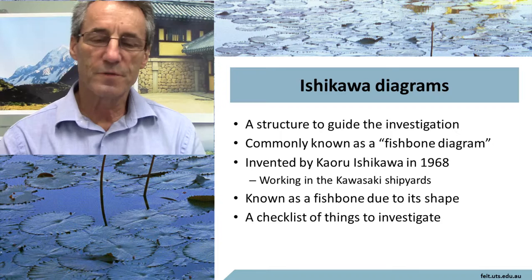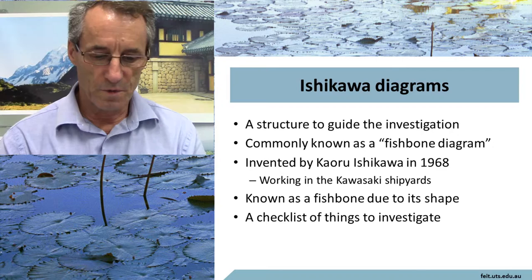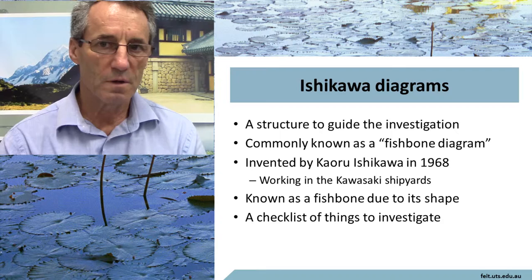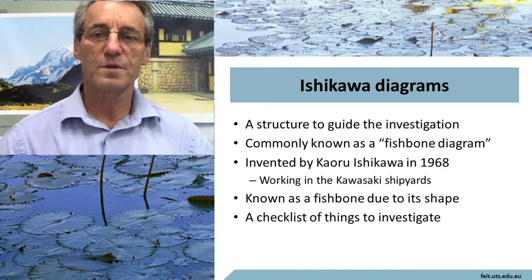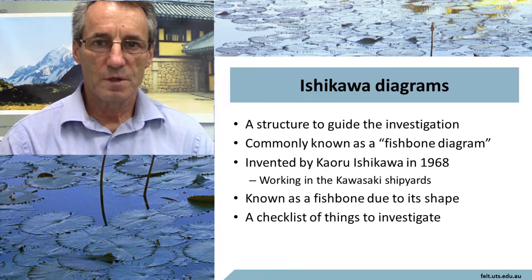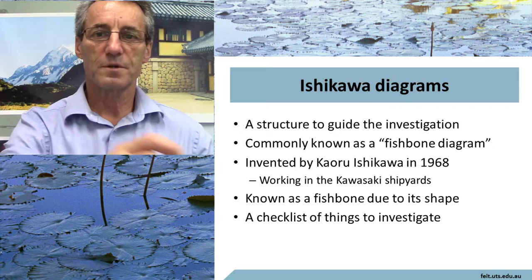But when you fill it all in, it starts to look a bit more like a snowflake. These were invented by Ishikawa in 1968. He was working in Kawasaki Prefecture, I think, or Kobe. But certainly he wanted this list of things to investigate. And so he proposed this — you have your main event line and then you have the things that contribute to the event line.